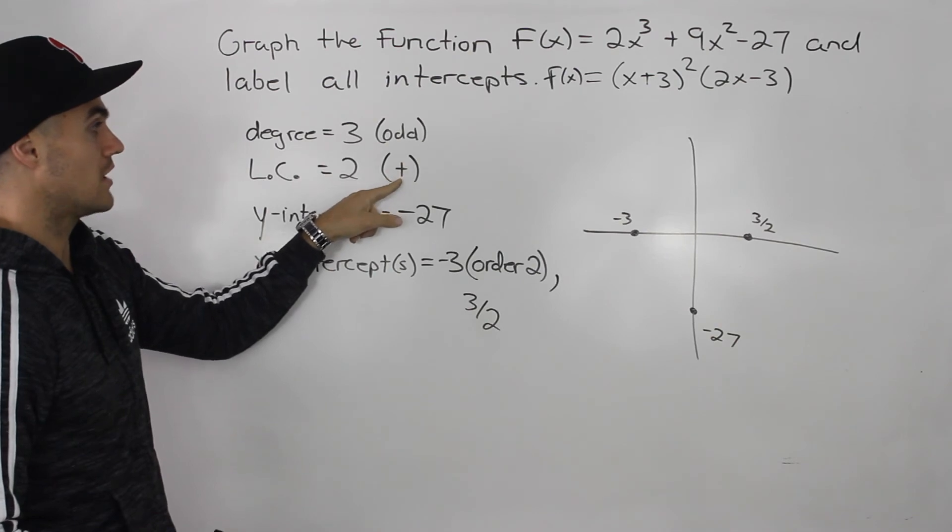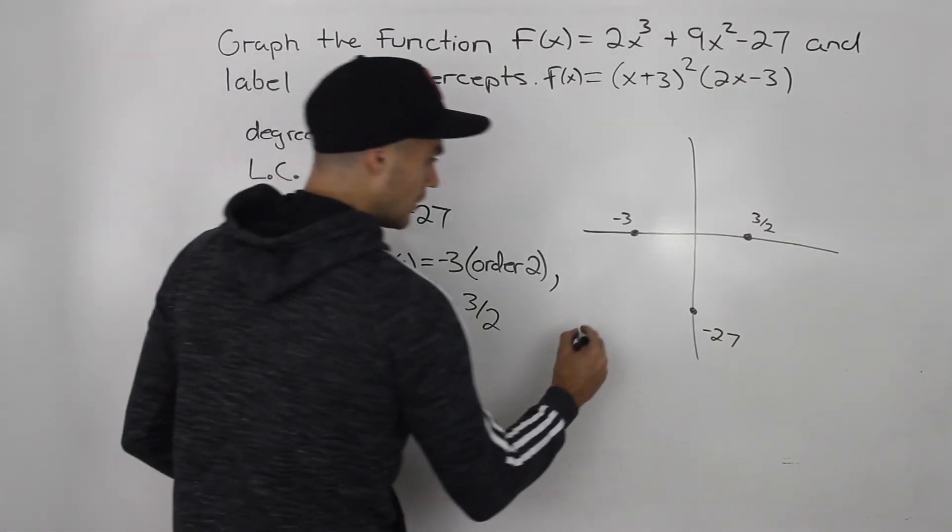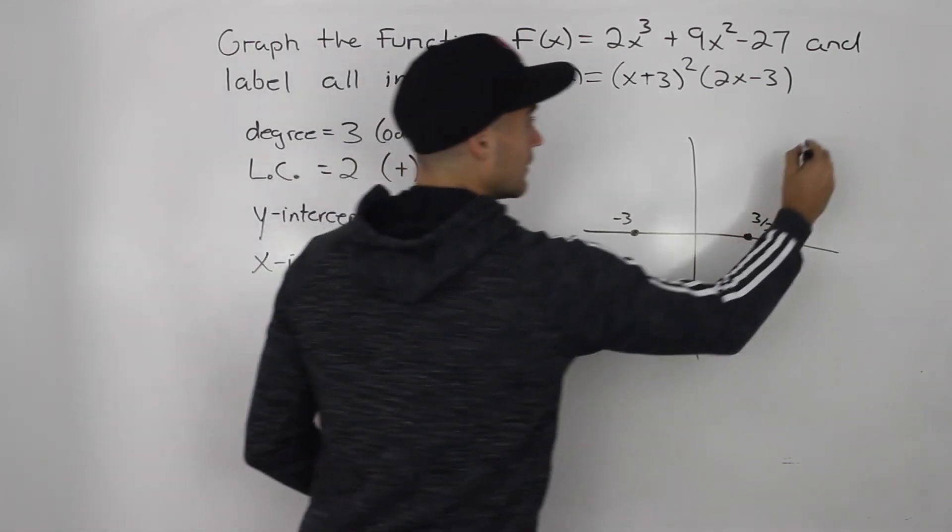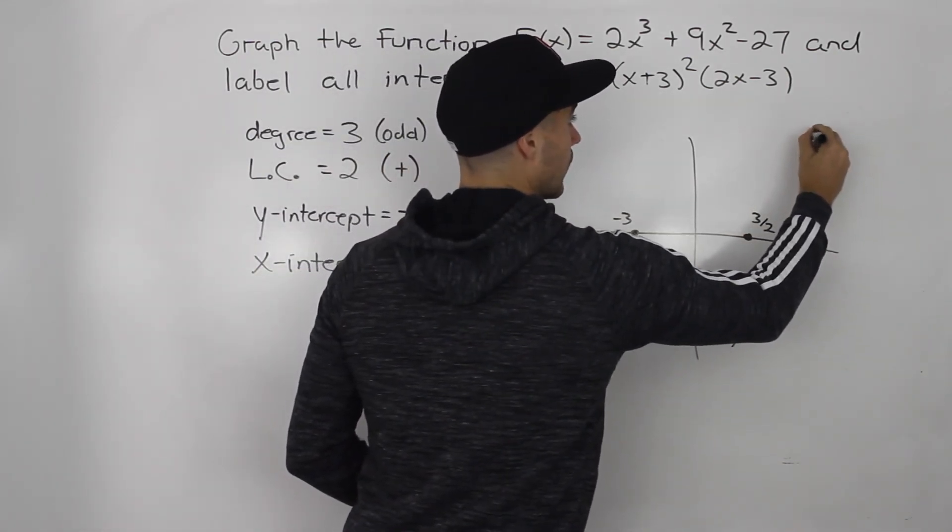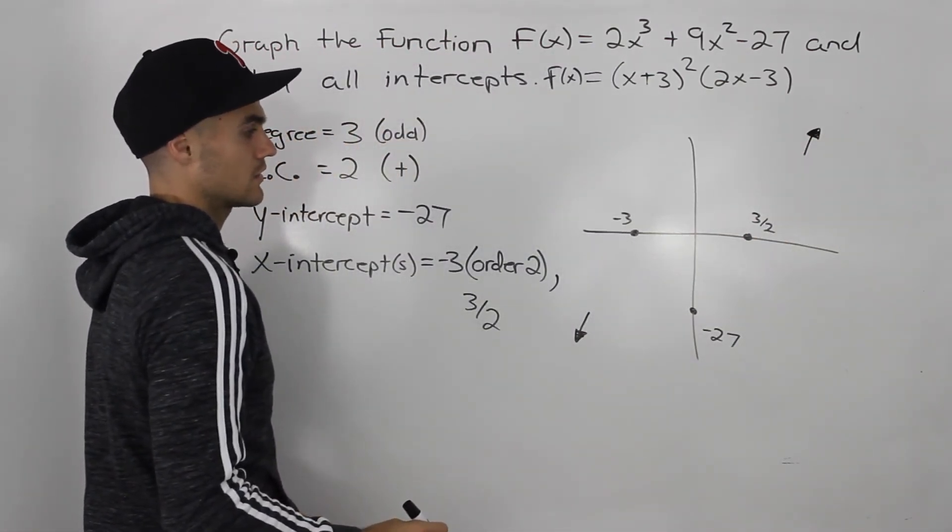So an odd degree, a positive leading coefficient, what are the end behaviors going to be? Well, we know that it's going to start in quadrant 3, and end in quadrant 1. So that's how the end behaviors are going to look.